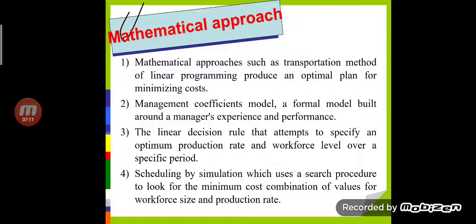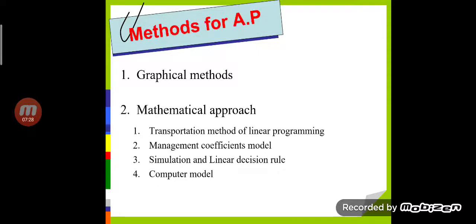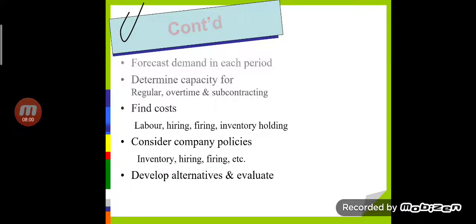These are the techniques and approaches covered under the mathematical approach. In the last lecture we learnt about the graphical methods for future predictions, and now in the mathematical approach we are using proper data and information for future planning. The four sub-points are: transportation method of linear programming, management coefficient model, simulations and linear decision rules, and computer model.